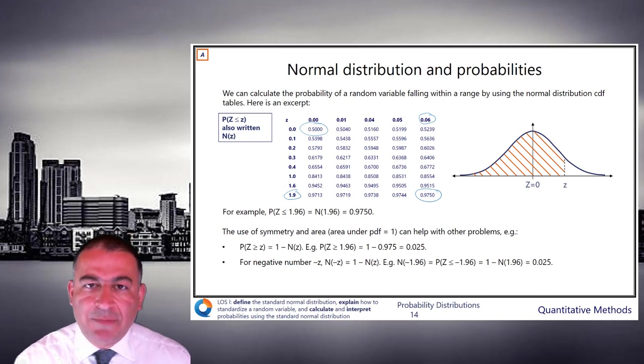In other words, 97.5% likelihood of being less than 1.96. What else do we know? What about z equals 1? So think about that. 0 to 1 is 34%. So minus infinity to 1 is 34 plus 50 equals 84%.